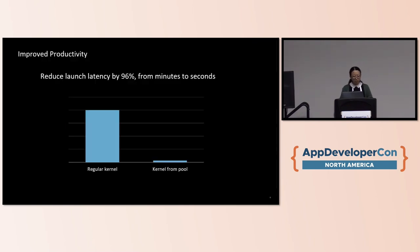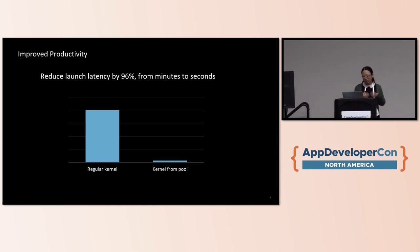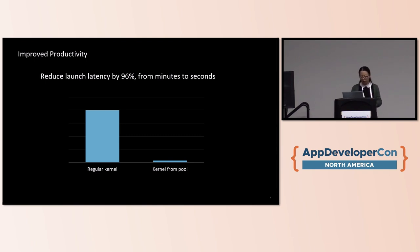By pre-warming our kernels, we basically reduce our launching latency by 96%. Launching latency is reduced from minutes to seconds. This improves our users' productivity by avoiding having to wait too long.